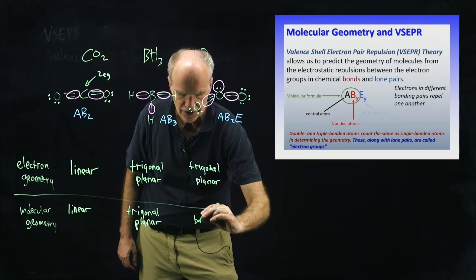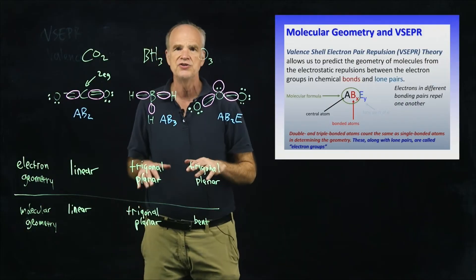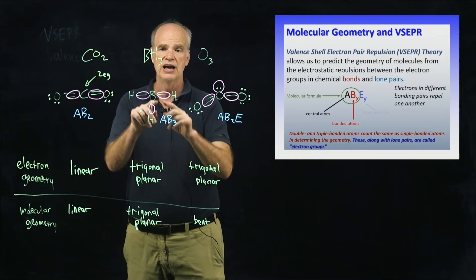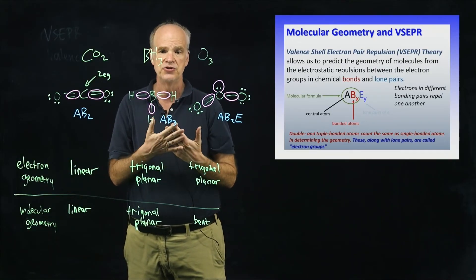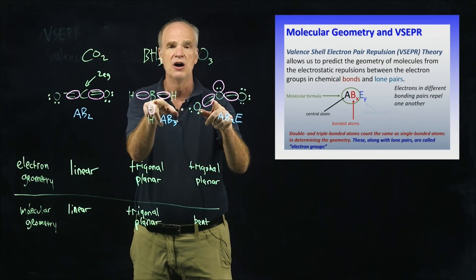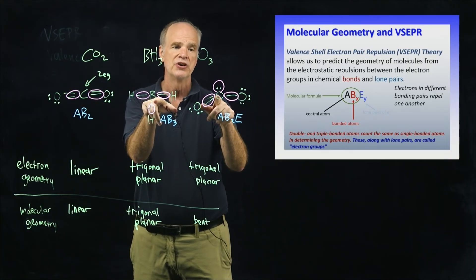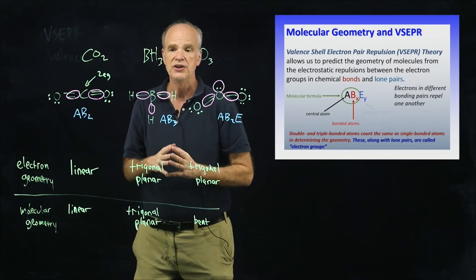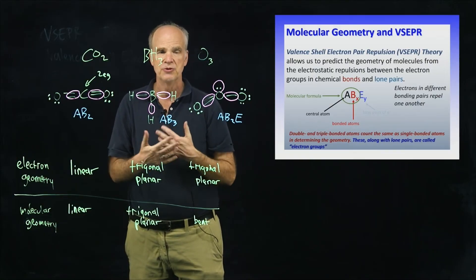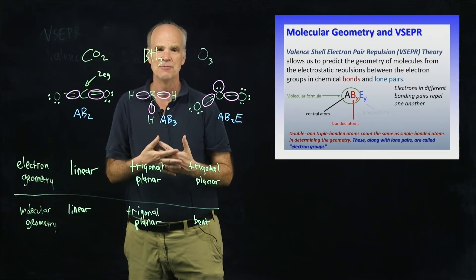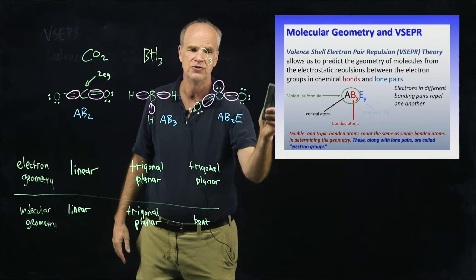So you can see that the number of electron groups around the central atom determines the general shape of the molecule. Two molecules can have the same number of electron groups but different types — lone pairs versus bonding groups — leading to different molecular geometries. We need to get comfortable with the terminology used in VSEPR to calculate the number of electron groups.